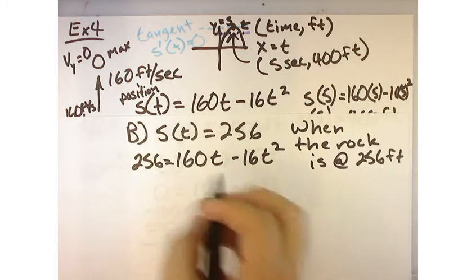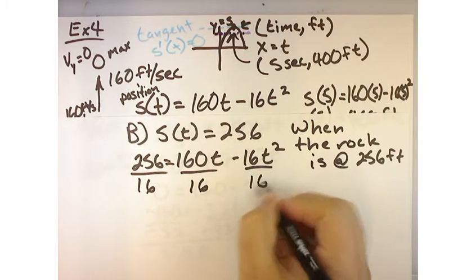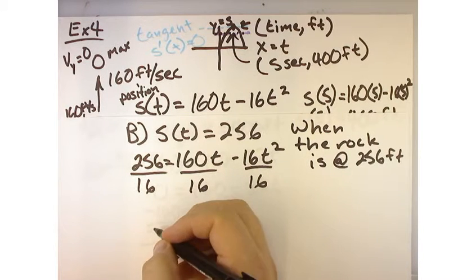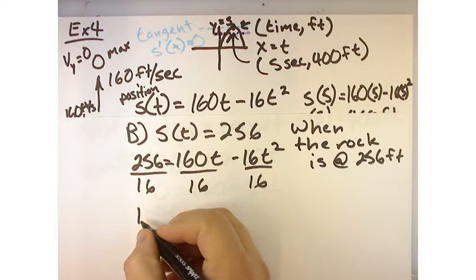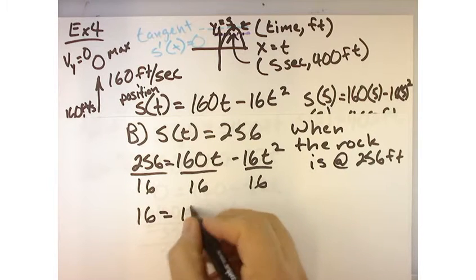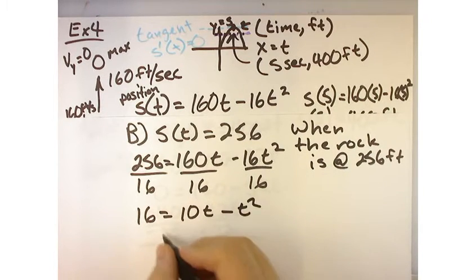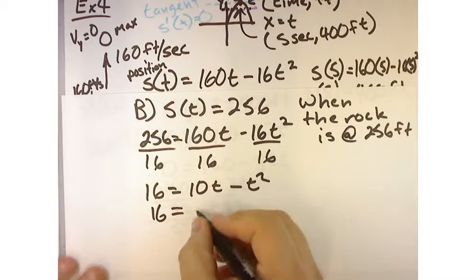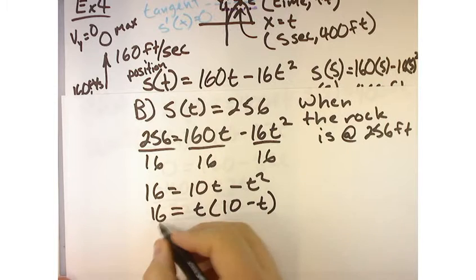So, what I want to do is, are all these factorable by 16? Yeah. Sure. Because we really want it to be. So, what's 256 divided by 16? It's 16. Wow, look at how that works. And then I get 10t minus t squared.